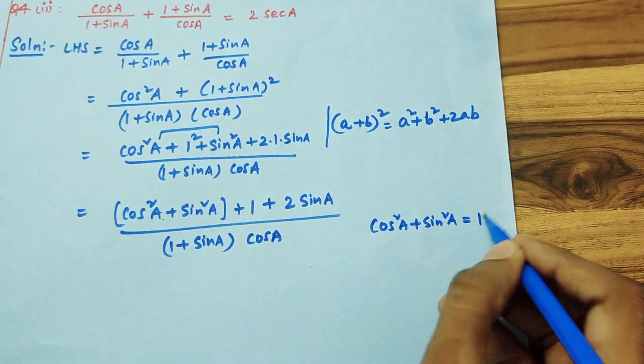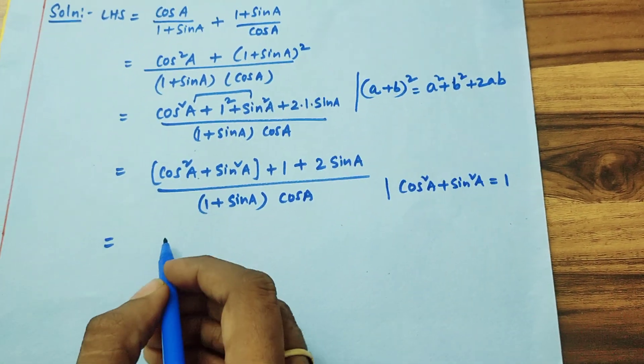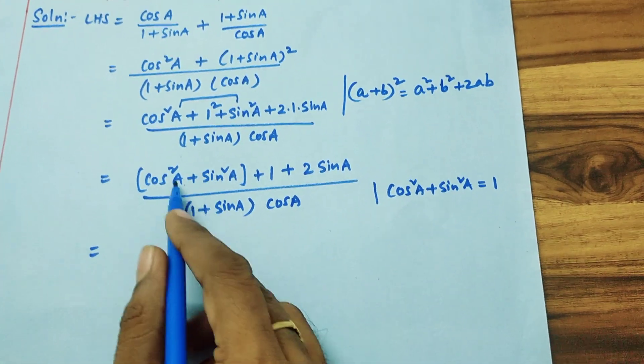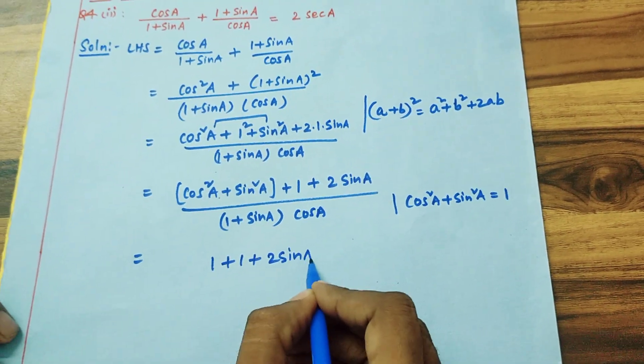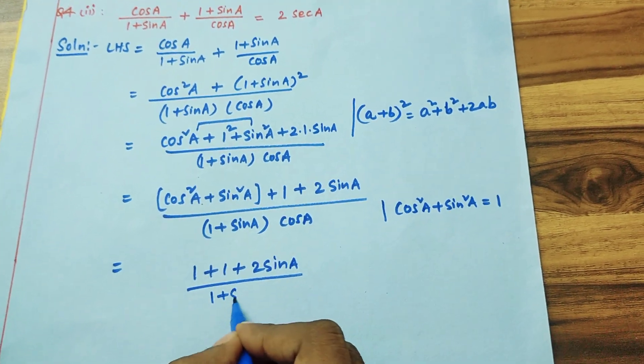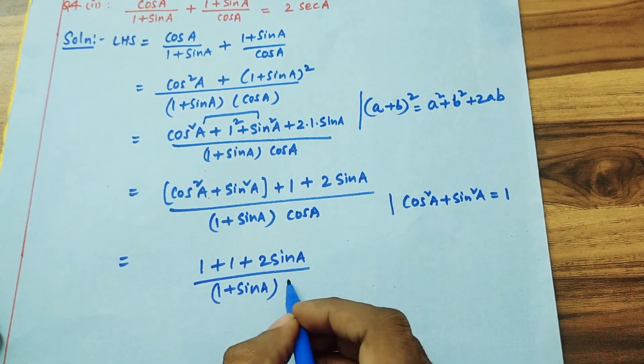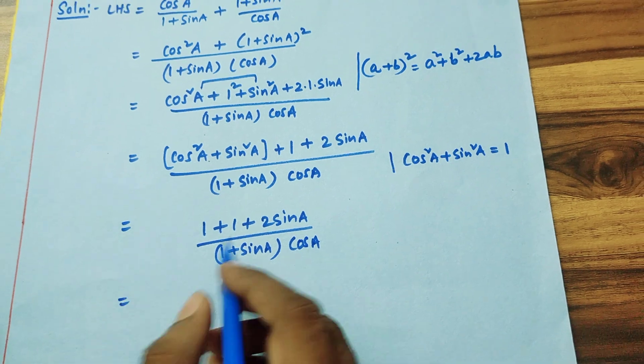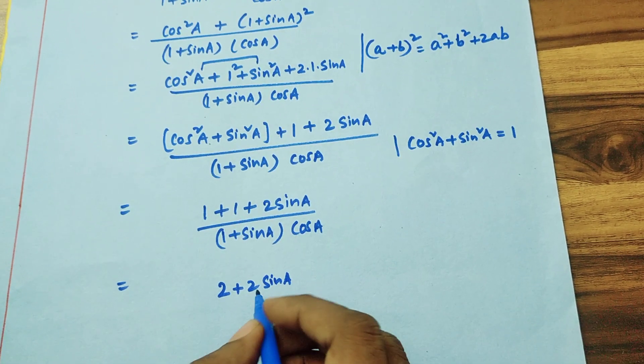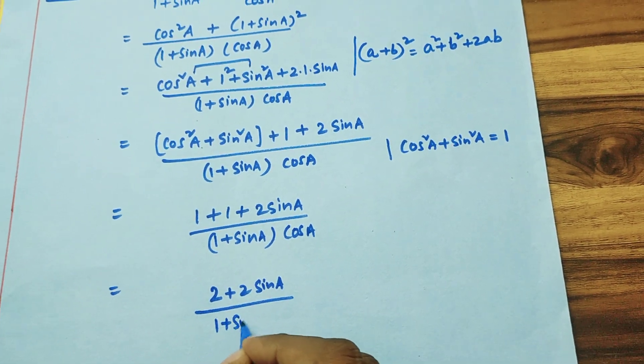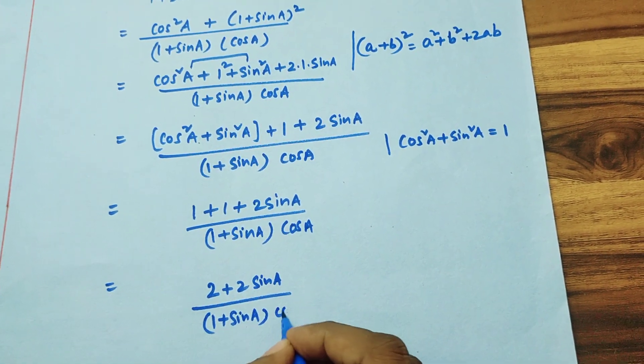1 plus 1 is 2 plus 2 sin A by 1 plus sin A into cos A.